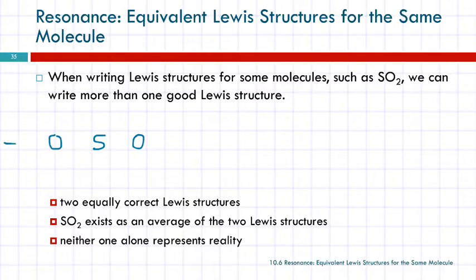And then we have to ask how many valence electrons total. How many does oxygen have? Six. And how many does sulfur have? Six. So we have three atoms, and they have six valence electrons each, so 18, right?